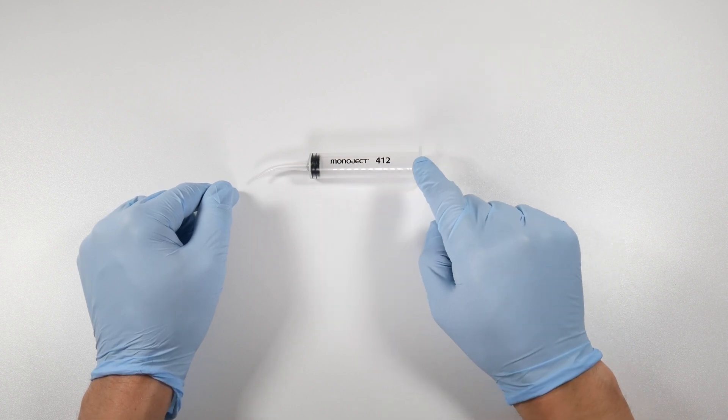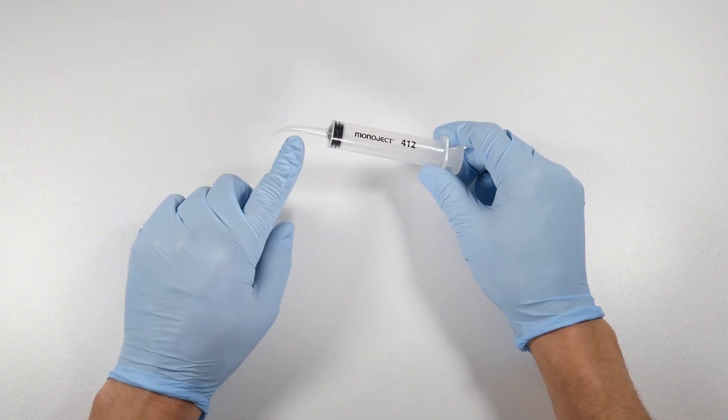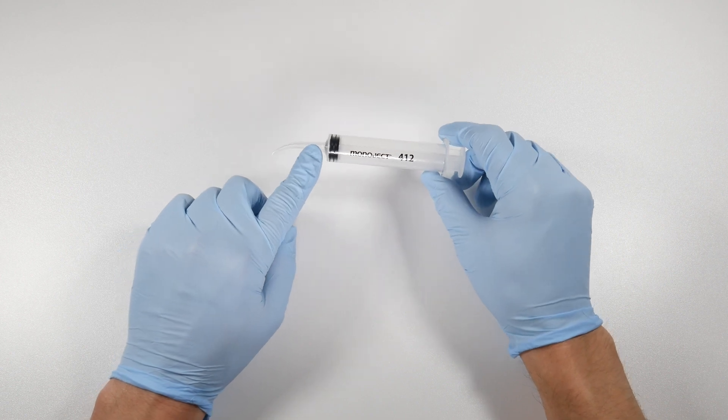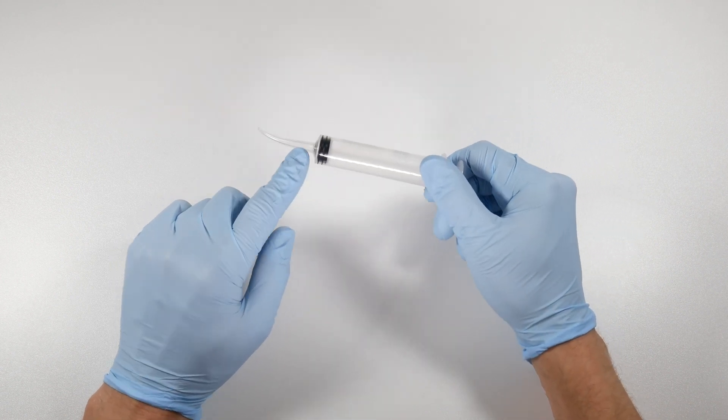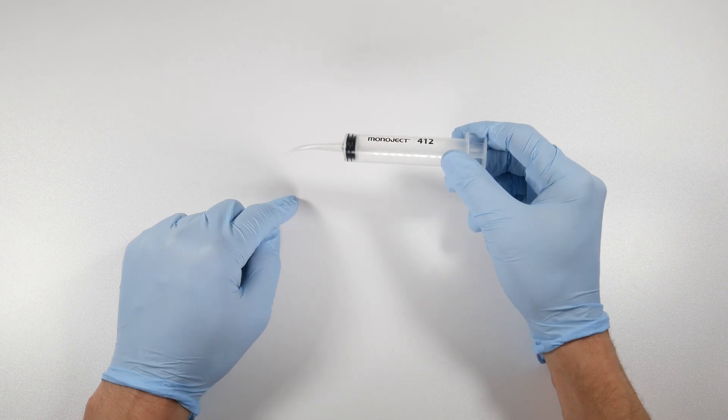The Monoject 412 is basically a syringe with a really narrow little tip on it. It has a curve to the tip which allows you to get better access to the upper teeth or the lower teeth when you're irrigating.